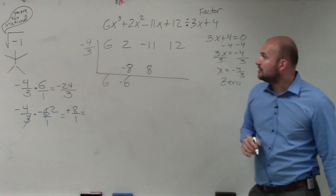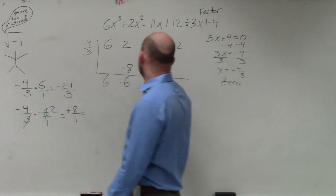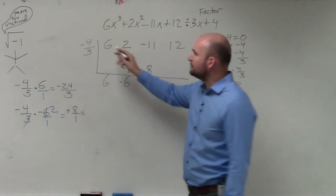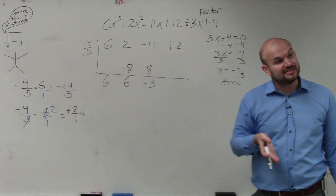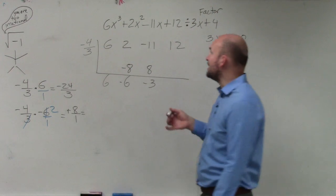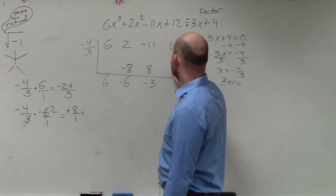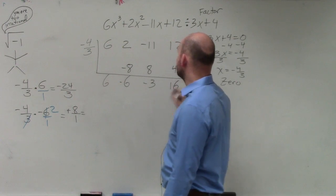Then negative 11 plus 8 is negative 3. Negative 3 times negative 4 thirds—the 3's will divide out, the negatives will turn to a positive. Therefore, it turns into a positive 4, which is 16.